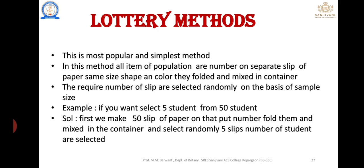The lottery method is something we generally see in different types of films — a lottery scenario where some cards are placed in a box and a person picks a specific card based on luck. This is the most popular and simplest method. In this method, all items of the population are numbered on separate slips of paper of the same size, shape, and color, then folded and mixed in a container. The required number of slips are then selected randomly based on the sample size.